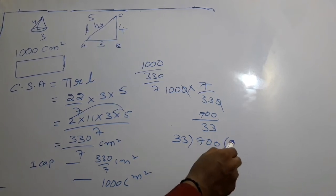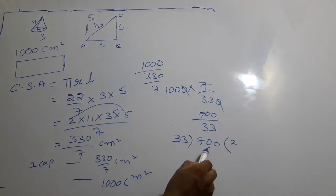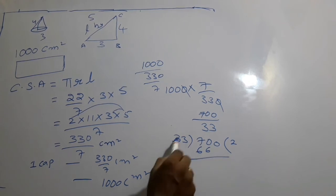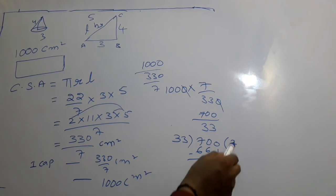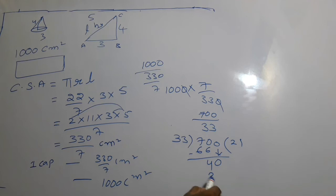700 divided by 33. Now we divide: 33 goes into 70 two times, that's 66. Difference is 4. Bring down 0 to get 40. 33 goes into 40 one time, that's 33. 7 left. Bring down 0. Two times again, 66.